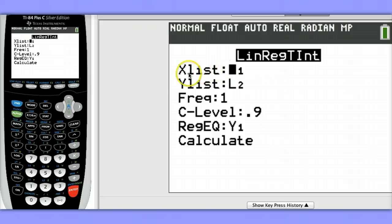Our x's are stored in List 1, our y's are in List 2, our frequency is 1 because we've entered each of the values exactly once. Our confidence level is going to be 0.9, and I've chosen to store my regression equation in y1.